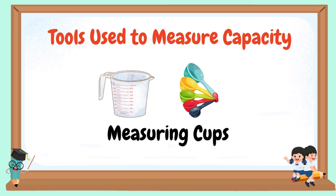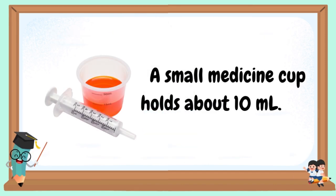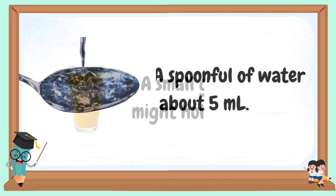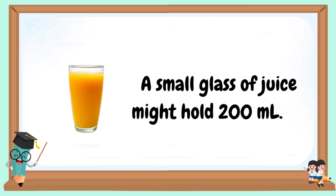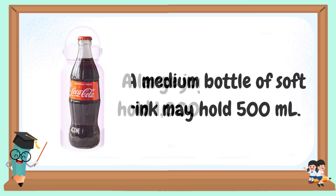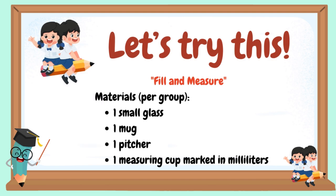Tools used to measure capacity: measuring cups, graduated cylinders, and beakers. A small medicine cup holds about 10 milliliters. A spoonful of water is about 5 milliliters. A small glass of juice might hold 200 milliliters. A medium bottle of soft drink may hold 500 milliliters. A large jug of water can hold 1,000 milliliters, which equals one liter.